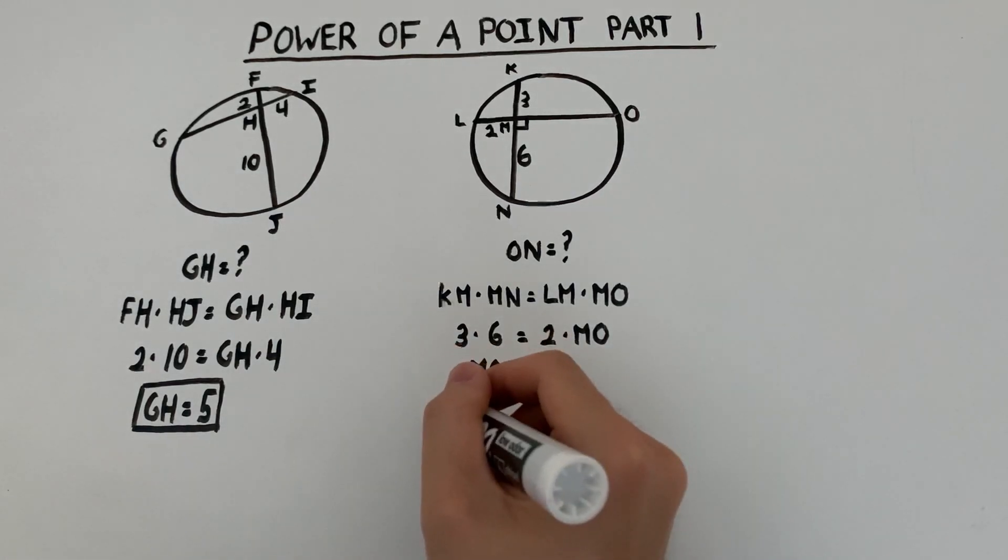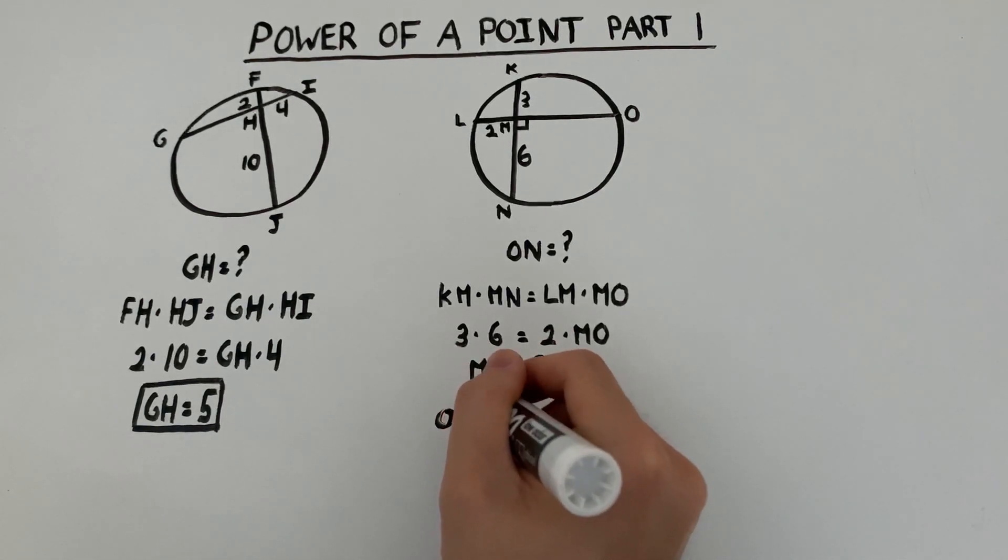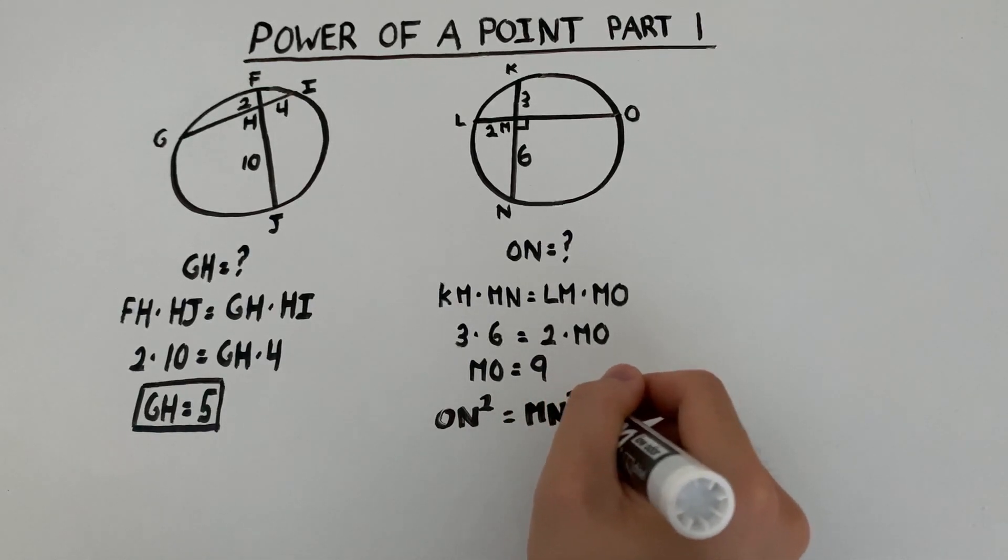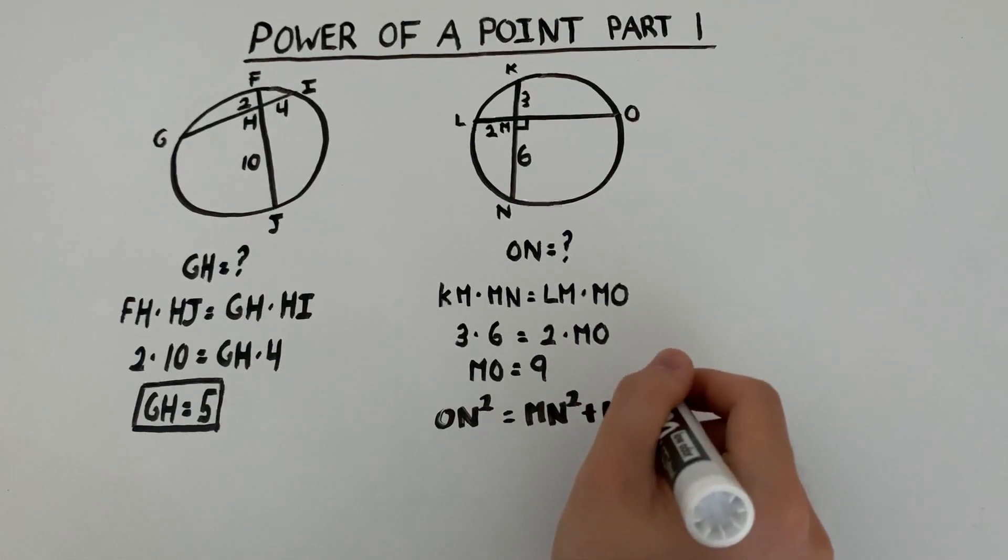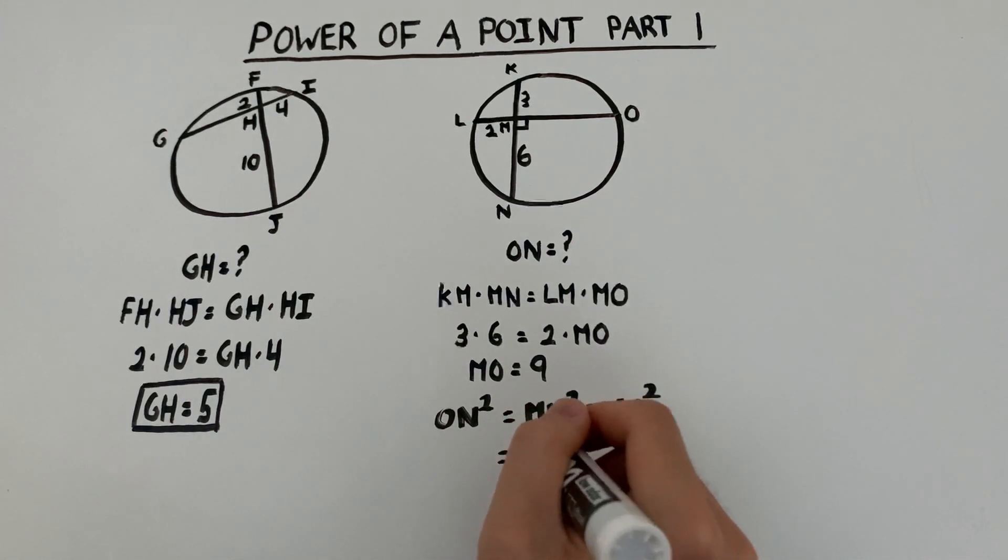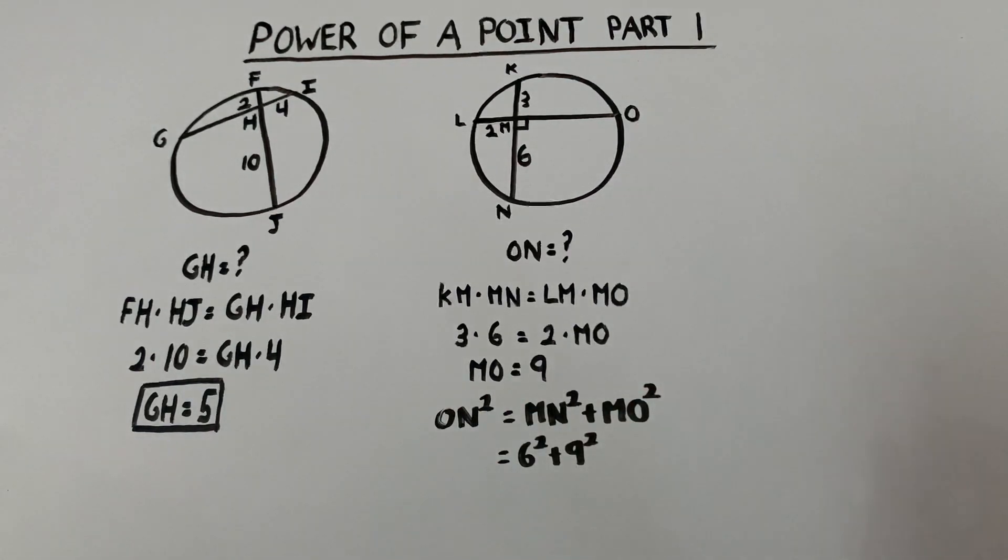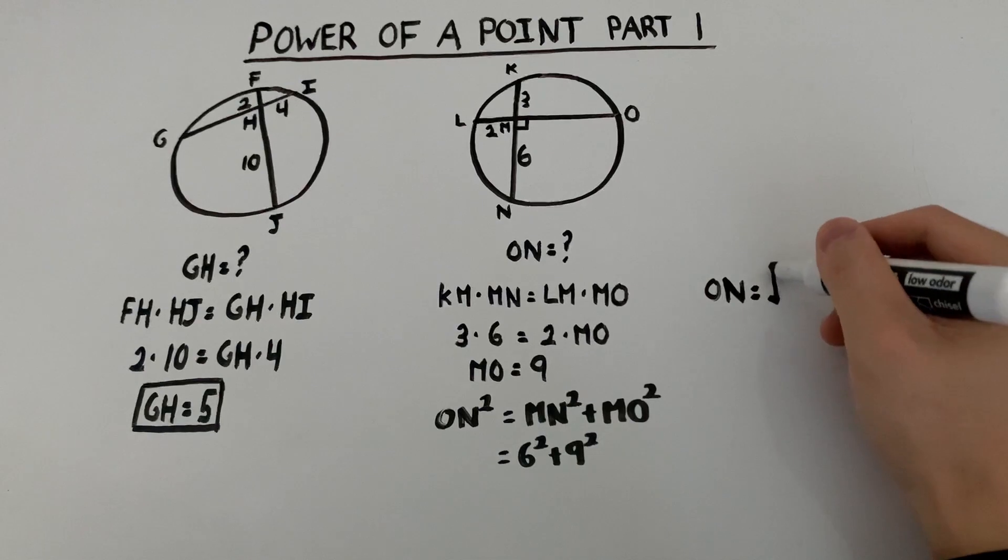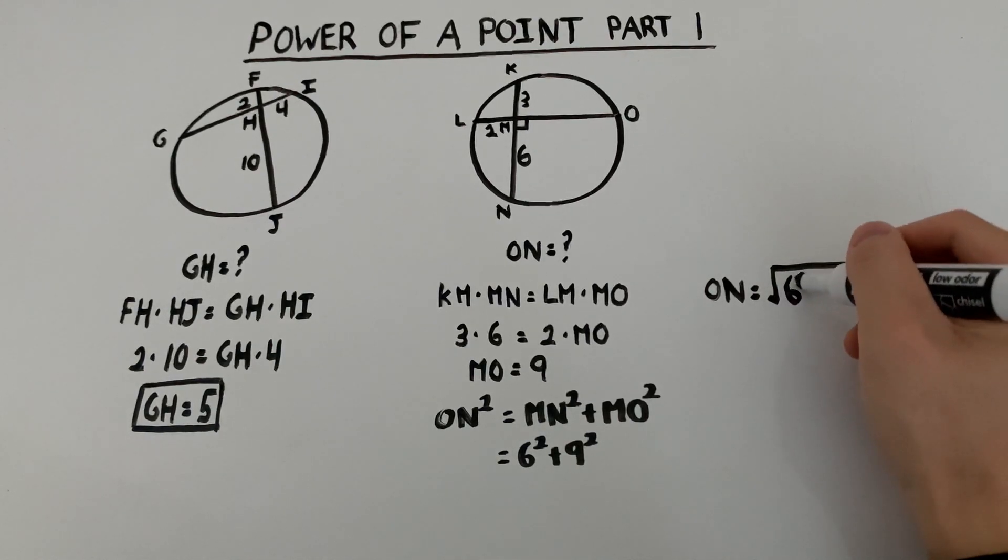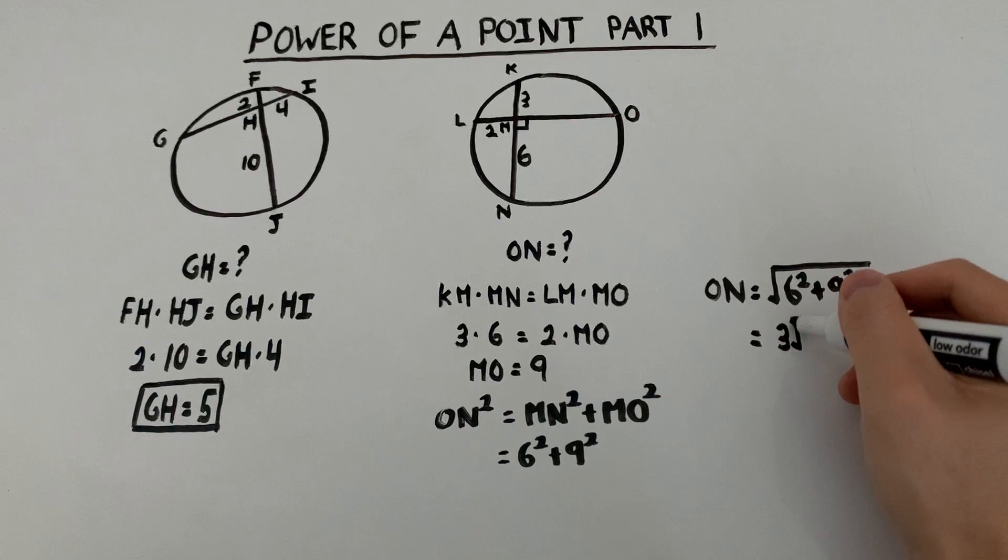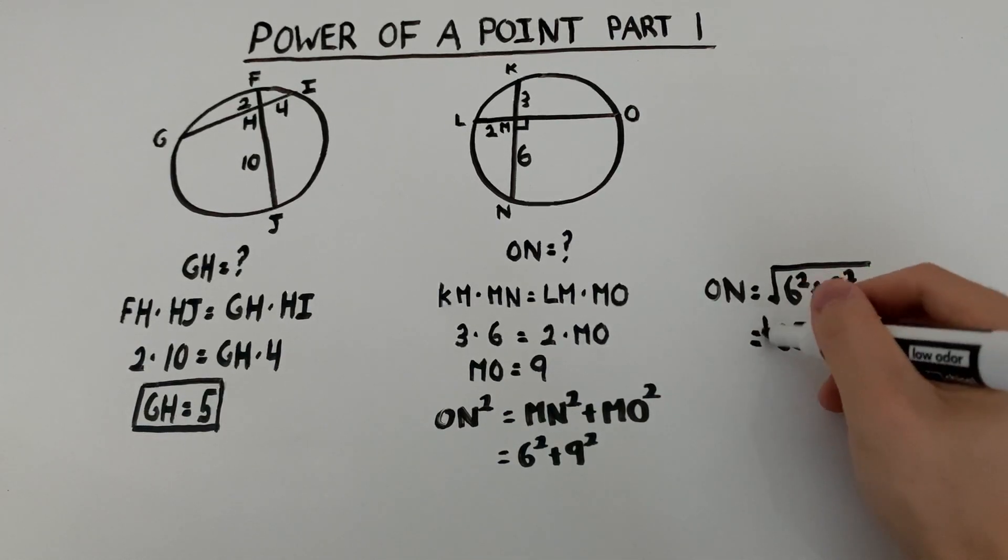So then we would have ON squared is equal to MN squared plus MO squared. MN is 6, MO is 9. So if we bring that over here, we'll find that ON is the square root of 6 squared plus 9 squared, which is equal to 3 root 13.